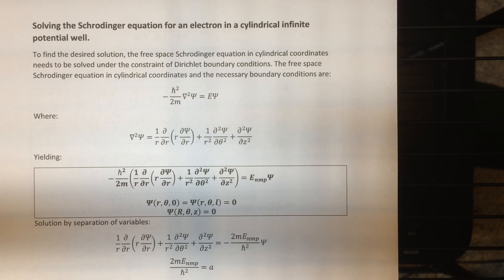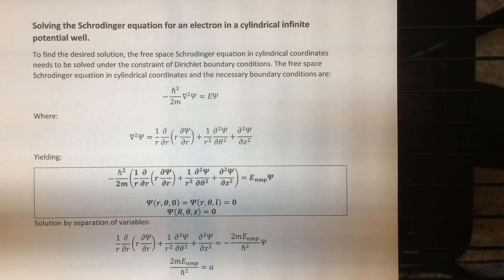Therefore, we can simulate the effect of the infinite potential well by setting the wave function equal to zero everywhere outside the potential well where the potential function is infinite, and then solve the Schrödinger equation in free space for what's going on inside the potential well, and then impose the right boundary conditions on that free space solution to make the overall wave function continuous — meaning we need to make the free space solution go to zero at the boundaries of the potential well.